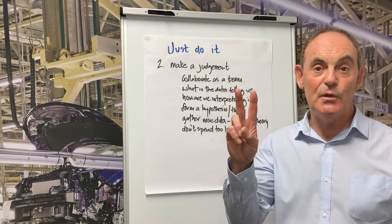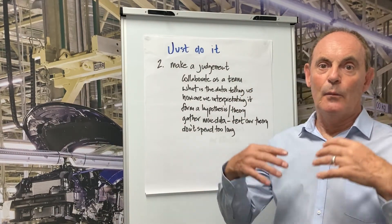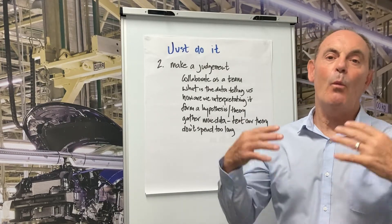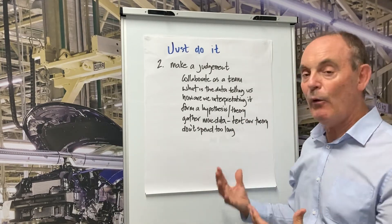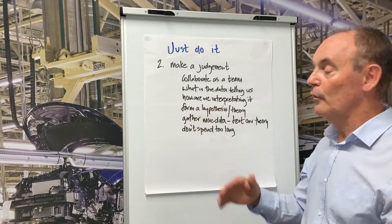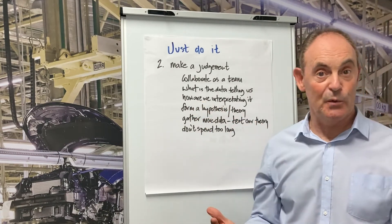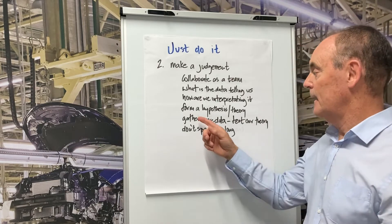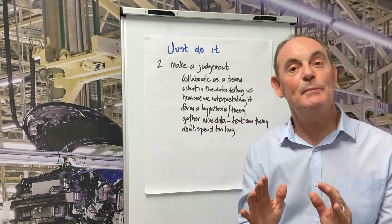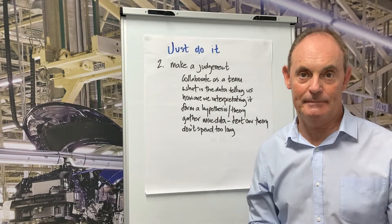A very important tip here is that data is very important because it gives us the direction we need to take. Step number two is where we make a judgment. We collaborate as a team and ask ourselves what is the data telling us and how are we interpreting the data. That allows us to form a hypothesis or a theory on what's causing the problem. Maybe we might have to gather more data and test our theory, but don't spend too long on this because the problem may get bigger.